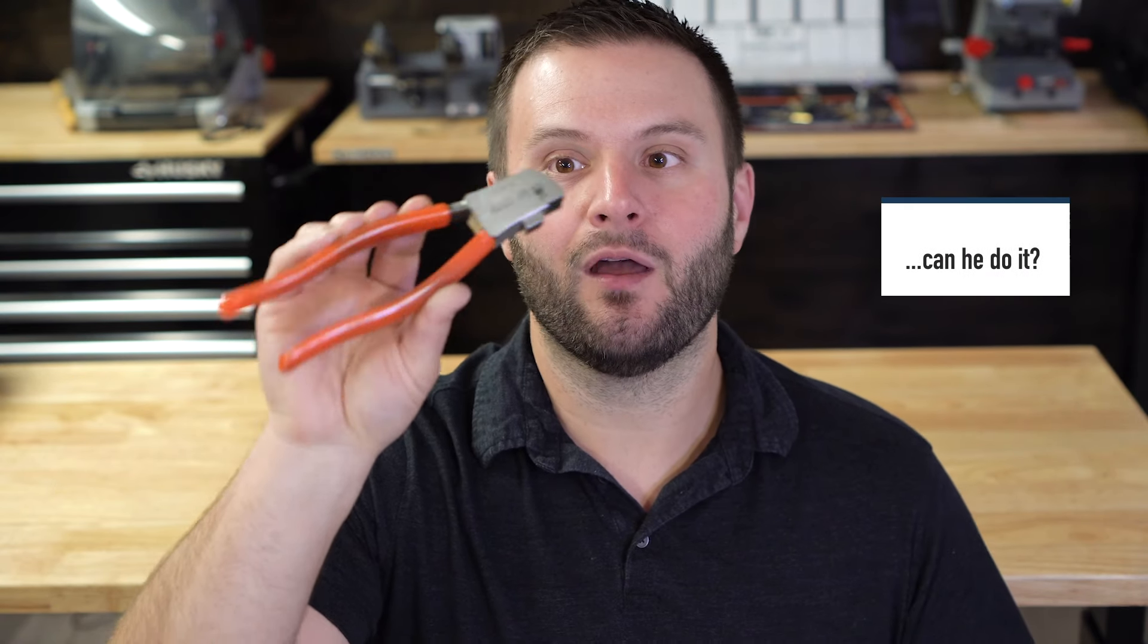Duplicating an SC1 key with this cutter is not really the ideal method or the most professional method to do so. However, it can be done fairly easily. So what I'm going to do is use this Lishi cutter and a fine tip Sharpie marker, and together we're going to duplicate an SC1 key and try it with this tool. Let's get started.